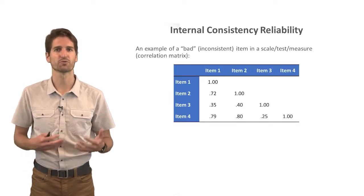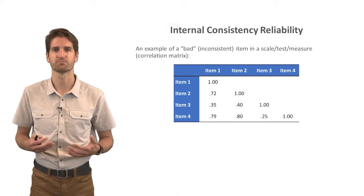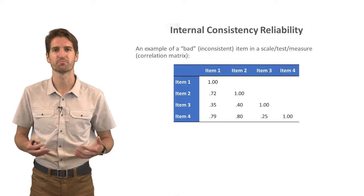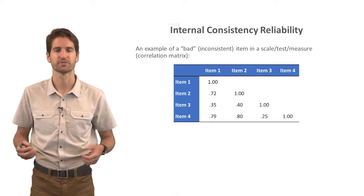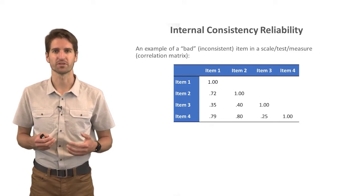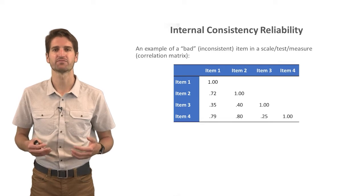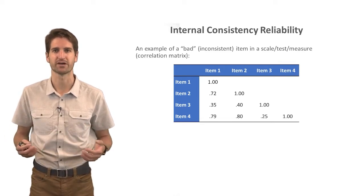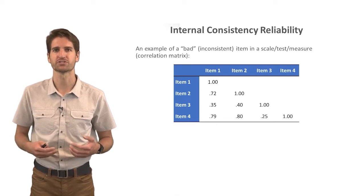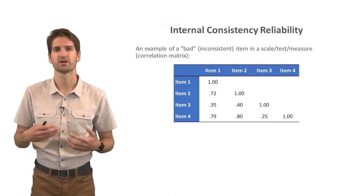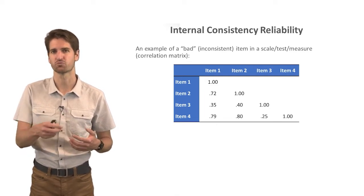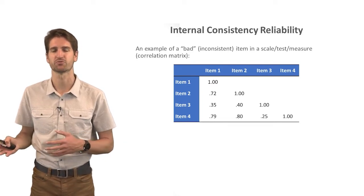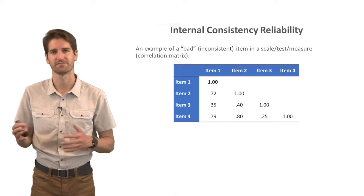To bring this forward conceptually, let's consider what a bad or inconsistent survey item might look like. Let's take a look at a correlation matrix where we have four items — perhaps four extraversion items as part of a personality inventory — where scores reflect employees' responses using a strongly disagree to strongly agree response format ranging from one to five respectively.